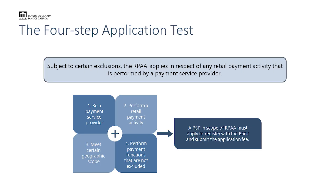Here they are. Number one, you are a payment service provider performing one of the five payment functions under the law as a service or a business. Number two, you are performing the Retail Payments Activity in relation to an electronic funds transfer. Number three is that you are within the geographic scope of the law, and the last of the four-part tests is that you or the payment activity that you're performing is not otherwise excluded under the law. A PSP that is within scope of the law must apply to register with the Bank of Canada and submit the application fee starting November 1st, 2024.